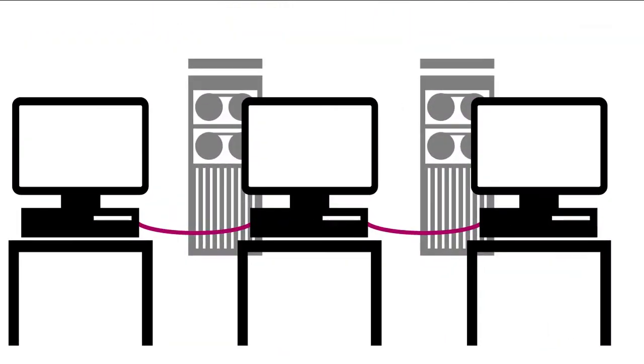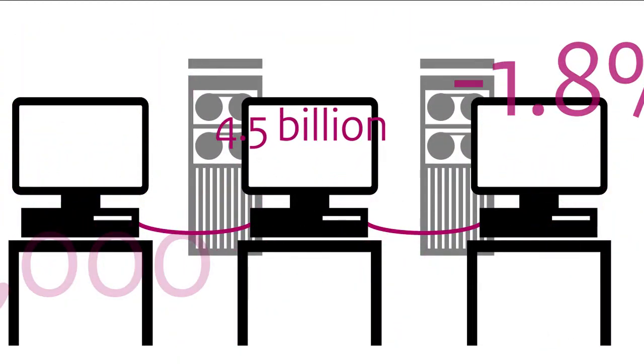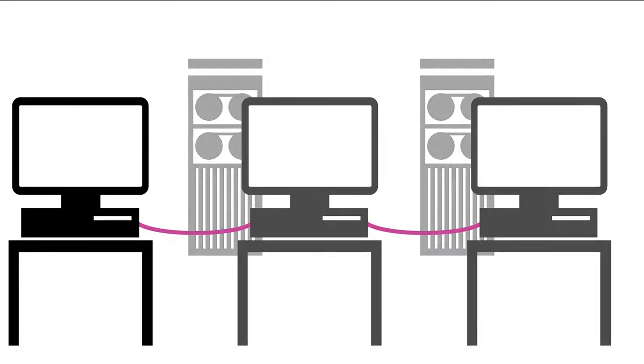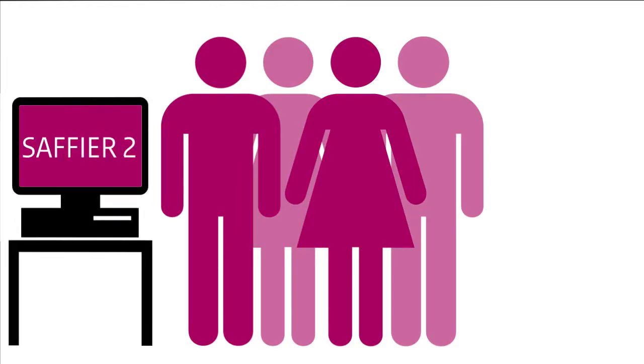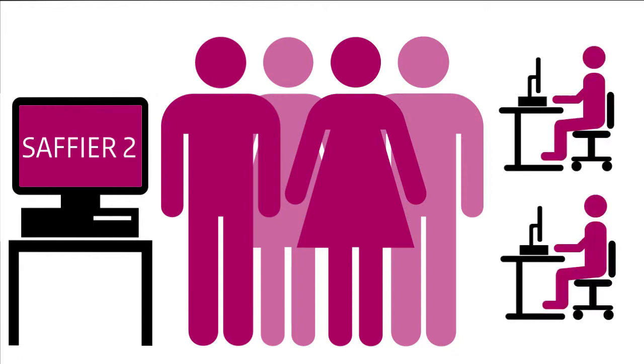People sometimes think that CPB works with one large computer model, but that is a myth. Projections come about in a collaboration process that takes place between people, SAFIR-2, a central macroeconomic model, and various smaller computer models.